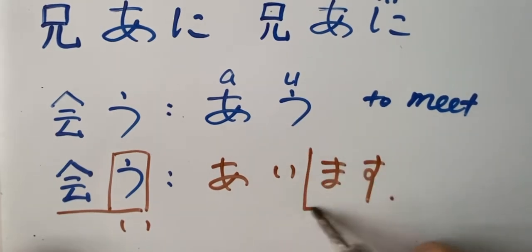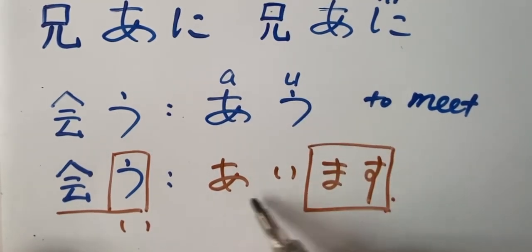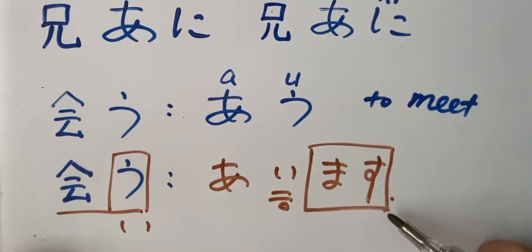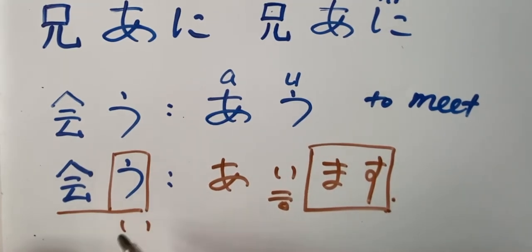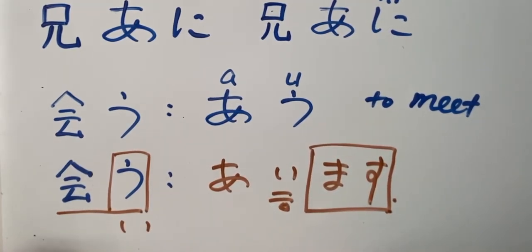Aimasu. Okay. Change the u to i here. You change this verb to apply the polite style. Aimasu. Okay. Au, it's dictionary form, the casual style.